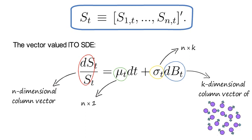Note both mu_t and sigma_t could be random variables that themselves follow an Ito SDE. Hence the time index.